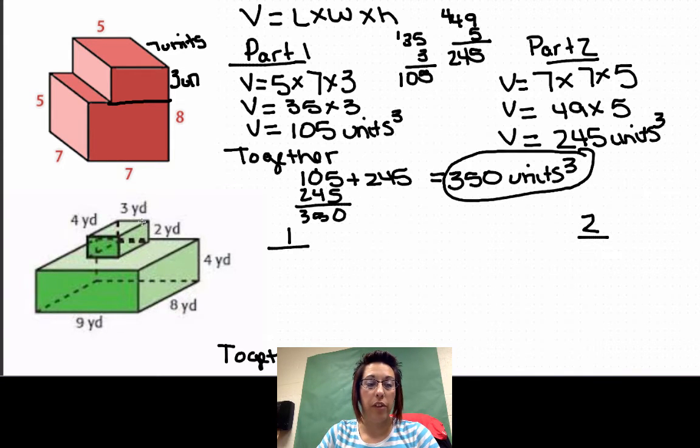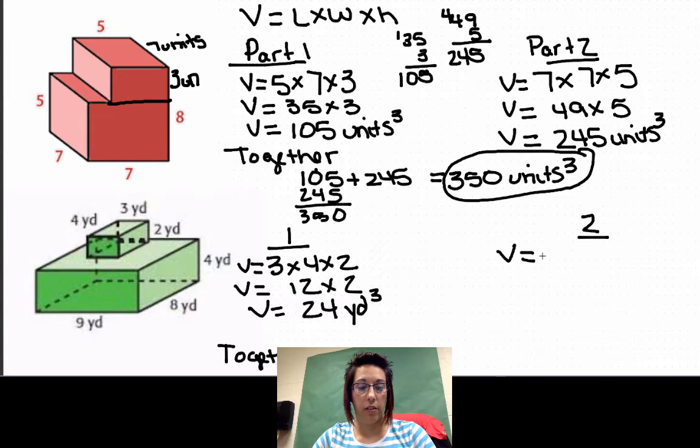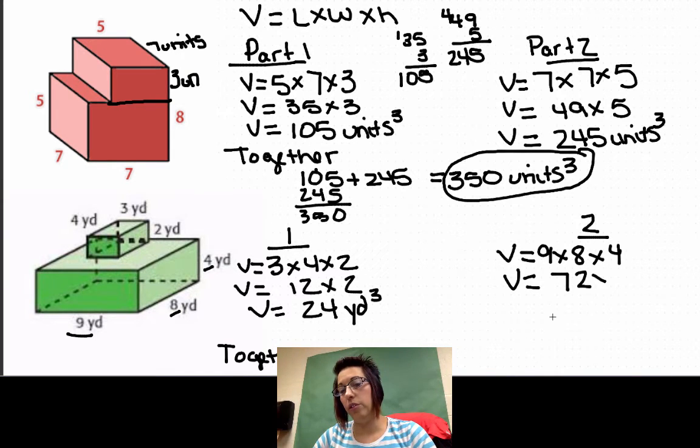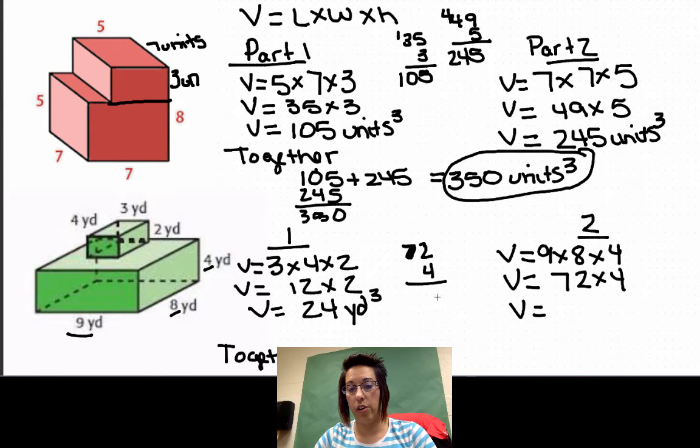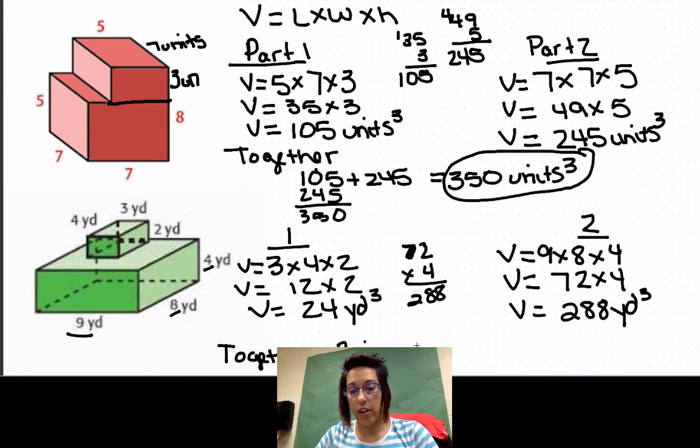So part one, 3 by 4 by 2. Volume equals 12 times 2, so volume equals 24 yards cubed. For number two, volume equals 9 times 8 times 4, so length times width times height. Volume equals 72 times 4, 288 yards cubed.